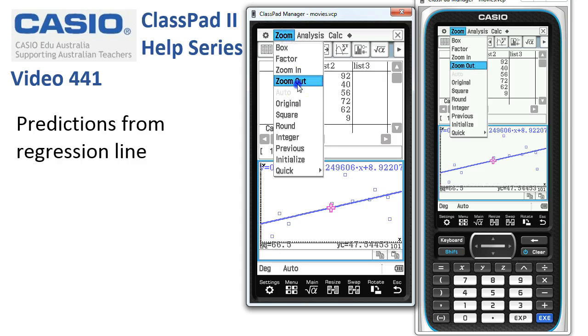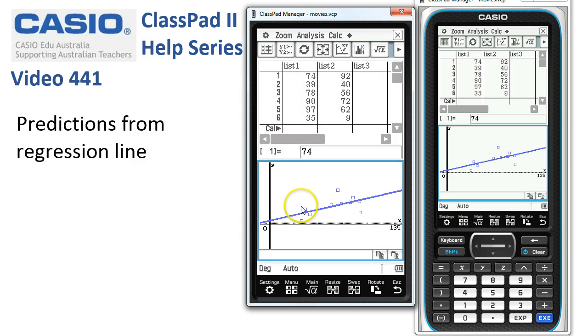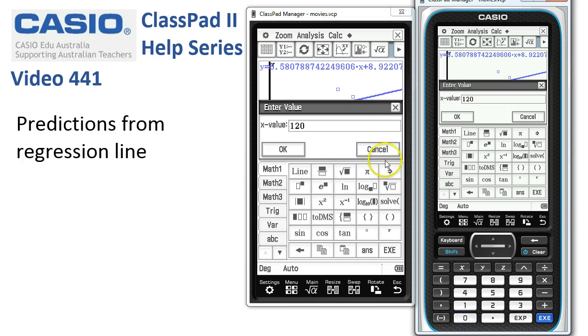Upstairs we can zoom out. ClassPad redraws it. Now you can see the scale goes from 0 to 135, so I should be fine to do a prediction for 120. I tap onto XY, type in 120. The dialog box opens up. I say OK.